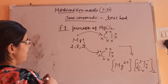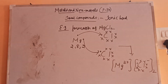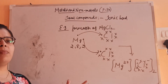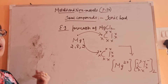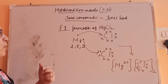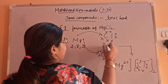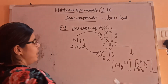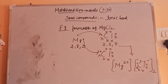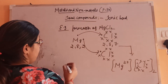Similarly, we can show the formation of other ionic compounds. This is very, very important — a direct question will come. When asked to show the formation of a particular compound, you have to show it like this: writing their configuration and then showing the transference of the electrons.